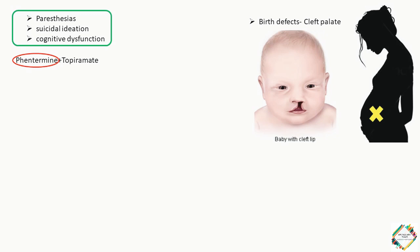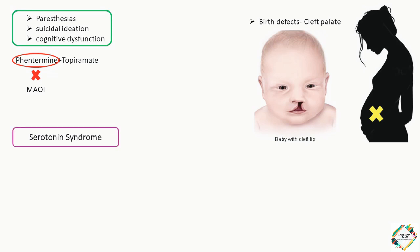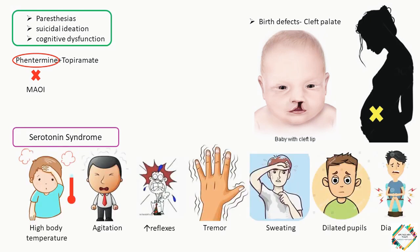There can be several drug interactions observed with this combination. The concomitant use of MAO inhibitors should be avoided due to the possibility of serotonin syndrome with the Phentermine component. Serotonin syndrome is observed as high temperature, agitation, increased reflexes, tremor, sweating, dilated pupils, and diarrhea. This is one interaction that should be avoided.